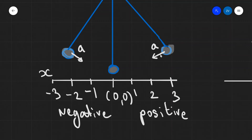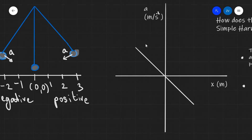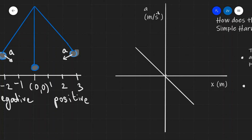This means that when x is negative, a is positive, and vice versa — when x is positive, the acceleration is negative. This is exactly what the negative gradient of the graph shows. When the acceleration is positive, the displacement is negative, and when the displacement is positive, the acceleration is negative, assuming the origin is at zero zero.